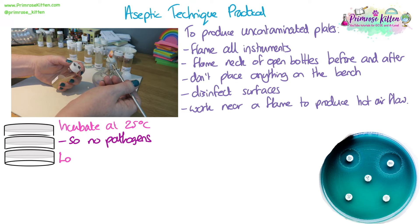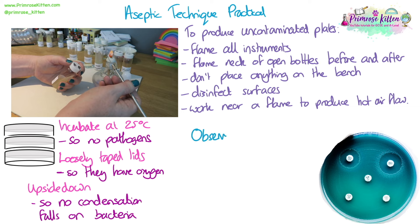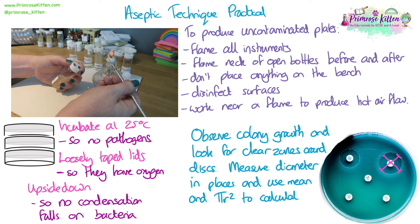After making your plates — for example to test antibiotic resistance with antibiotic discs on bacteria — incubate at 25°C so that pathogenic bacteria don't grow. Loosely tape the lids shut so bacteria still have oxygen. Place plates upside down so no condensation falls on the bacteria. After a few days, observe colony growth and look for clear zones around antibiotic discs. Measure the diameter in two places at right angles, take the mean, and use the πr² formula to calculate the area of the clear zone. Larger clear zones mean more bacteria were killed, so the antibiotic is stronger.